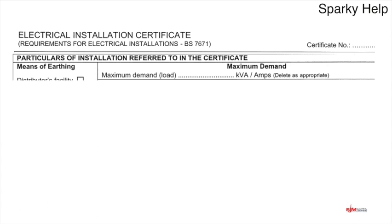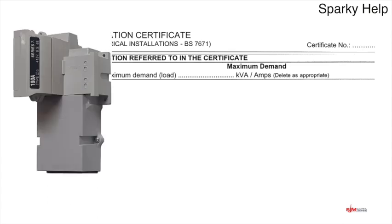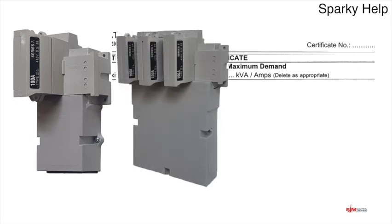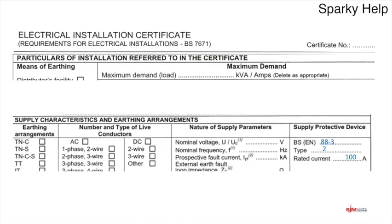The maximum demand can be expressed as either KVA or amps — delete as applicable. What people often do is look at the incoming service head; here we can see a 100 amp supply, and here is a three-phase 100 amp service head. The protective device size gets recorded on supply characteristics, which is part of the electrical installation certificate, shown there as 100 amps, whether single-phase or three-phase.